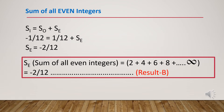Now let's find the sum of all even integers. We saw that SI equals SO plus SE. The value of SI is minus 1/12, and the value of SO is 1/12 as derived previously. So SE equals minus 1/12 minus 1/12, which is minus 2/12. Therefore SE, the sum of all even integers — 2 plus 4 plus 6 plus 8, etc., up to infinity — equals minus 2/12. We call this Result B.